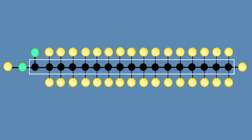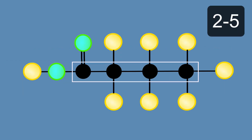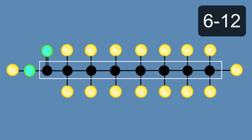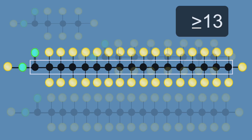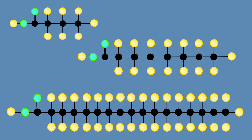The fatty acid chains are categorized based on the number of carbons they have. Short chain fatty acids have 2 to 5 carbons. Medium chain fatty acids have 6 to 12 carbons. Long chain fatty acids have 13 or more carbons.